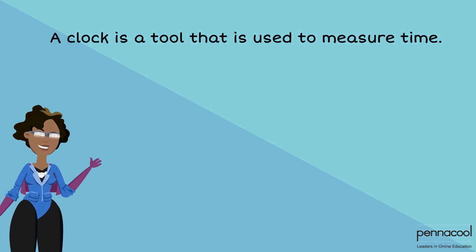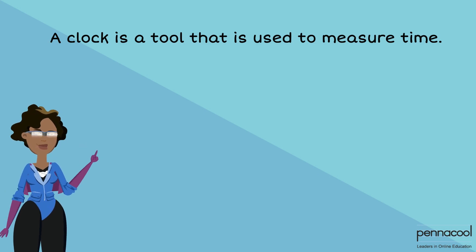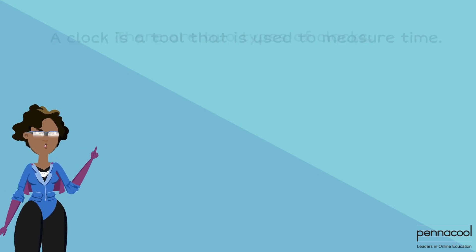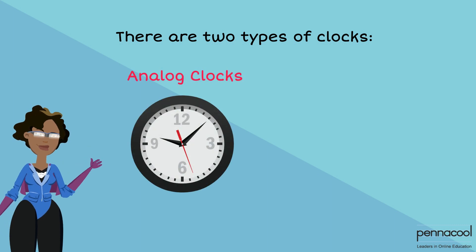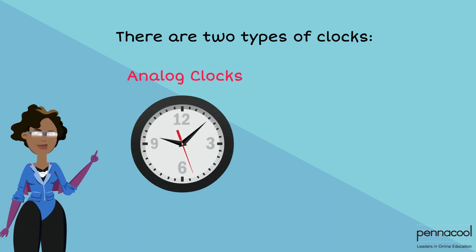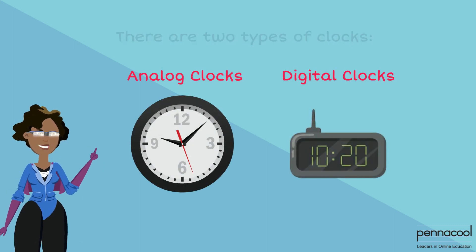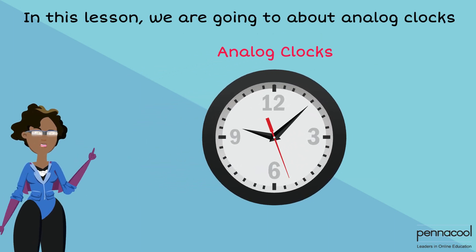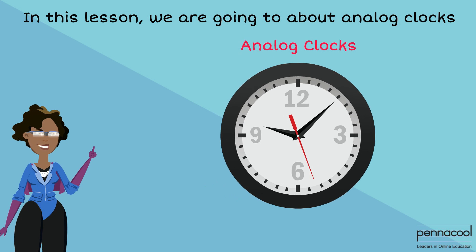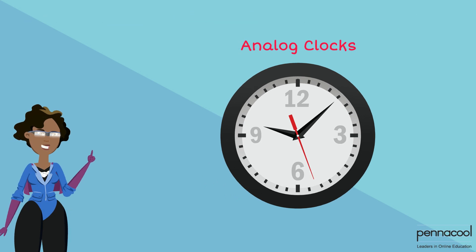A clock is a tool that is used to measure time. There are two types of clocks: analog clocks and digital clocks. In this lesson, we are going to learn about analog clocks.